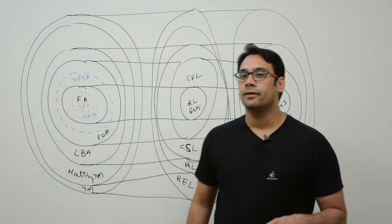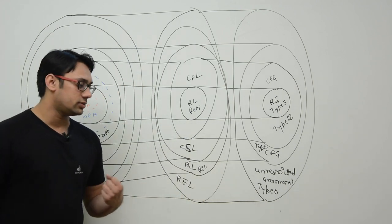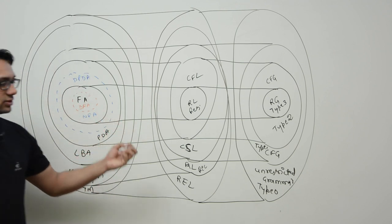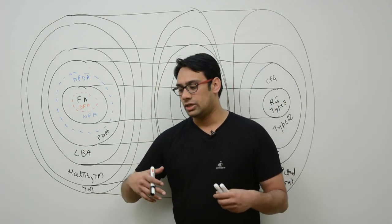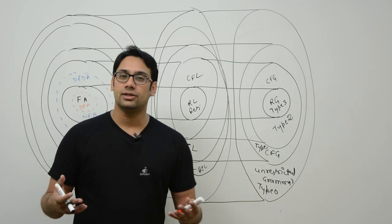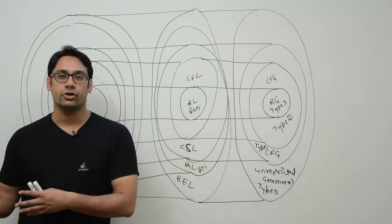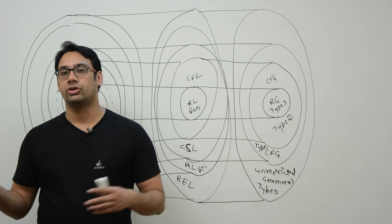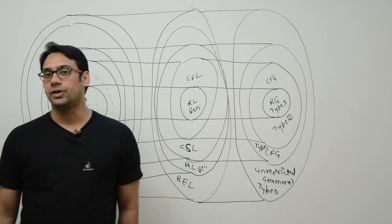After that, we are going to study computability and decidability of a function, and then complexity classes. We will be studying grammars in more detail — what different operations you can perform on a grammar, for example how to minimize a grammar, how to convert a given grammar to a pushdown automata or vice versa, or how to convert a grammar to a finite automata and vice versa. There are a lot of sub-topics which we will be covering.